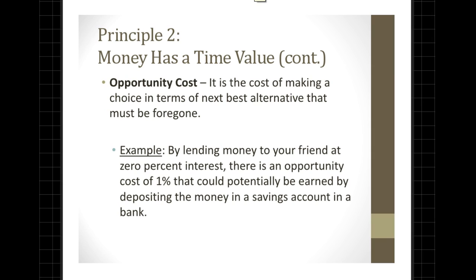A second reason is that we need to acknowledge the opportunity cost of funds — of money. Opportunity cost is an economic term and it basically represents the cost of making a choice in terms of the next best alternative that must be foregone. An example would be that by lending money to your friend at 0% interest, there is an opportunity cost of 1% that could potentially be earned by depositing the money in a savings account at a bank. You would hesitate to lend the money to your friend because the alternative is the foregone 1% interest you could have been earning.